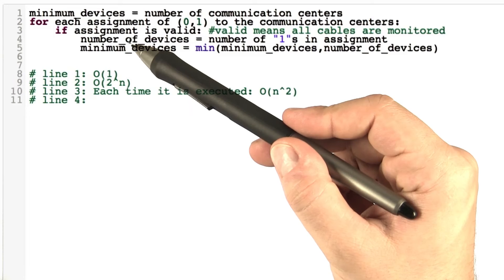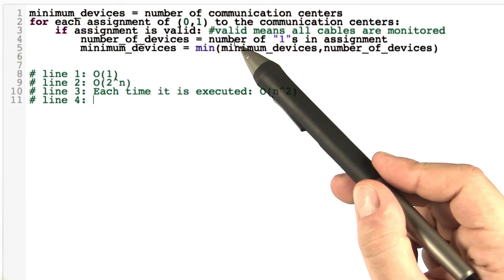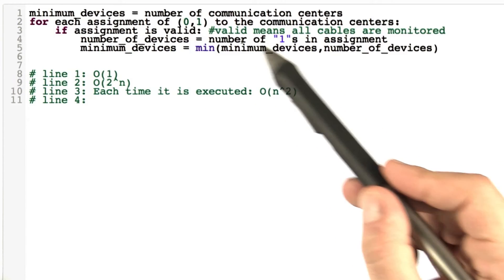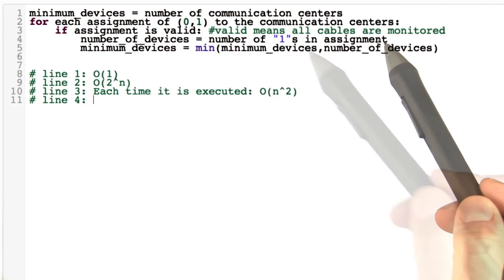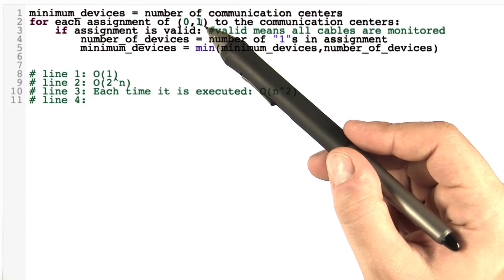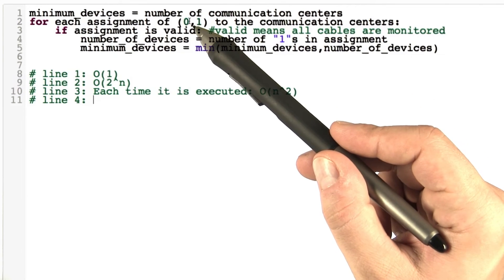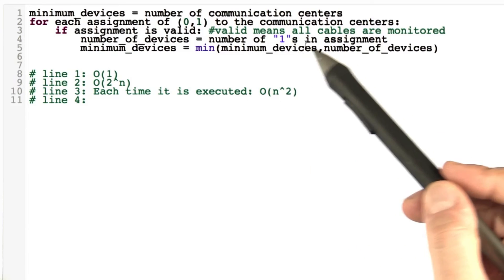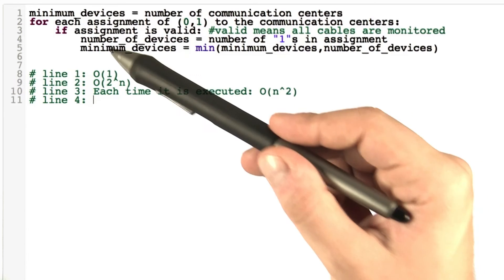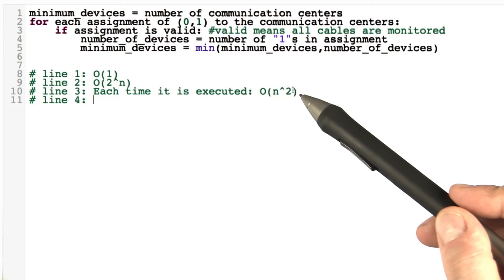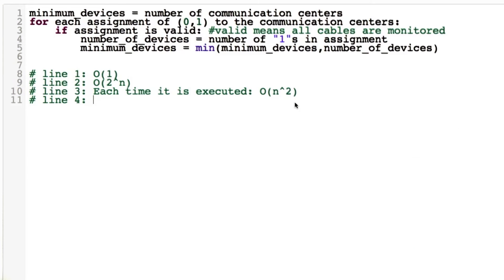Now what about line number 4? Each time this line is executed, we have to do the sum of all the ones in the assignment. And now the assignment concerns the communication centers. So we have to go through n communication centers and count how many ones we find. So each time this line is executed, it will take O(n), which is linear time.